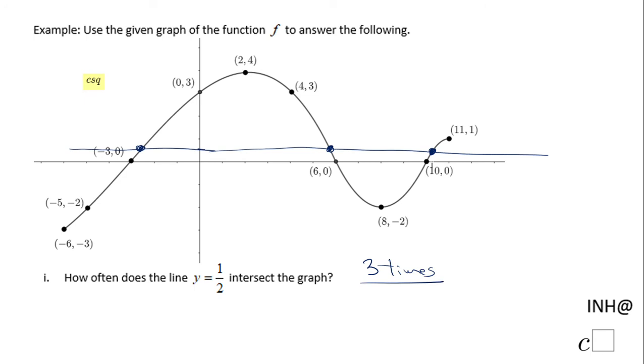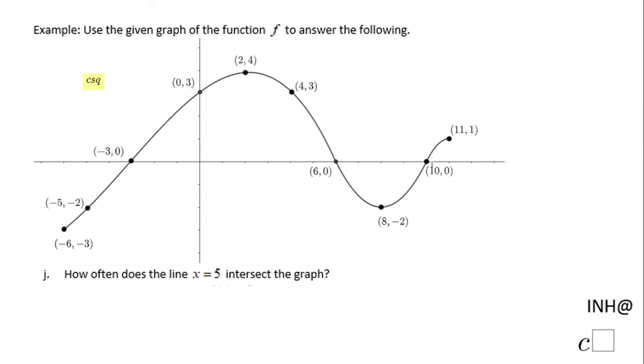Okay, so now let's move to the next part which says how often does the line x equals 5 intersect the graph? 1, 2, 3, 4, 5 right here. I'm going to draw x equals 5 which is a vertical line, and you notice that x equals 5 intersects our graph only one time, and that should be the case because this is a function. You cannot have multiple points of intersection.